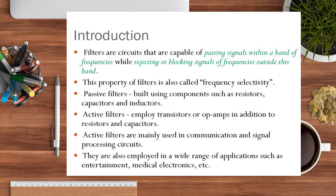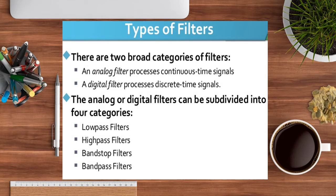Active filters employ transistors and op-amps along with capacitors and resistors. Passive filters are built using RLC components. Both active and passive filters are used to select frequencies and are widely applicable for a wide range of applications such as entertainment, televisions, medical applications, and more in electronic circuitry. There are two broad classifications: analog filters and digital filters.